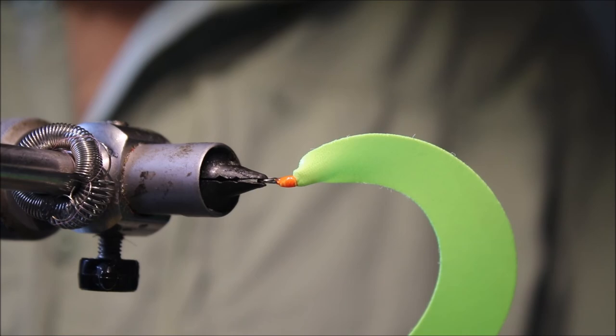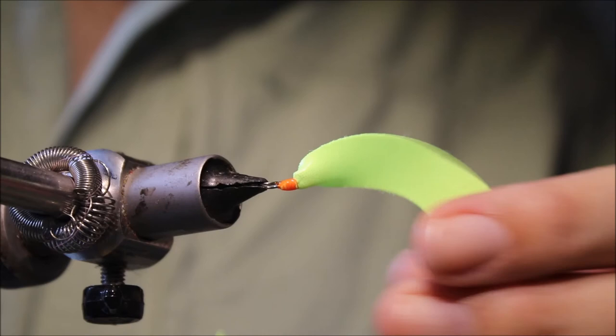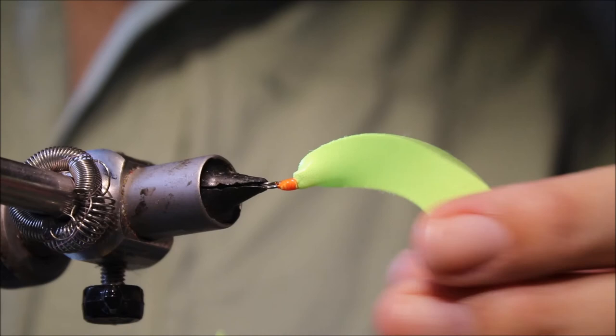So there you go. As I said, dead simple. Very easy to do. And that's you get a lovely curly tail, wiggle tail to put on your tube flies or your tandem rig flies. Thanks for watching guys. Bye.